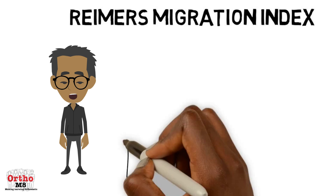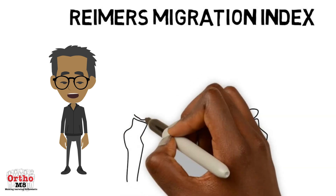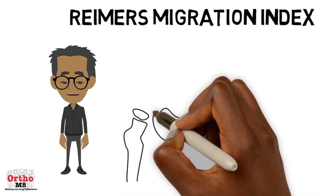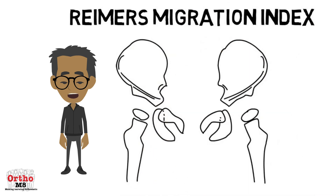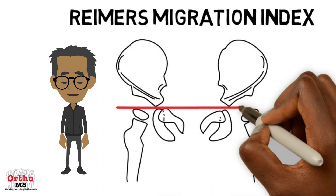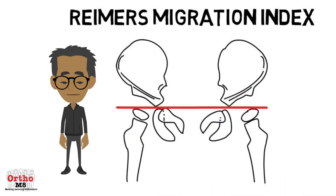It's measured by drawing Hilgenreiner's line, then Perkins line, and then two parallel lines marking the medial and lateral edges of the femoral head.